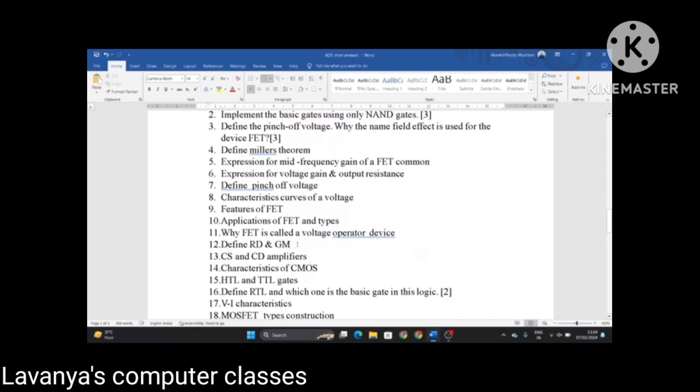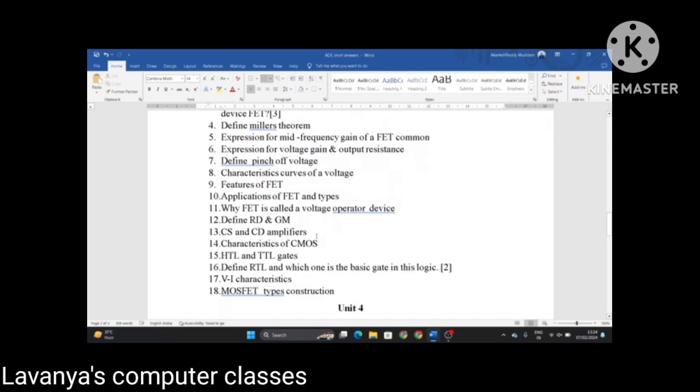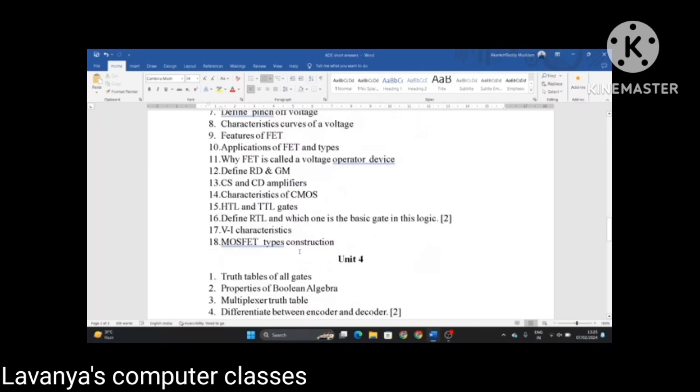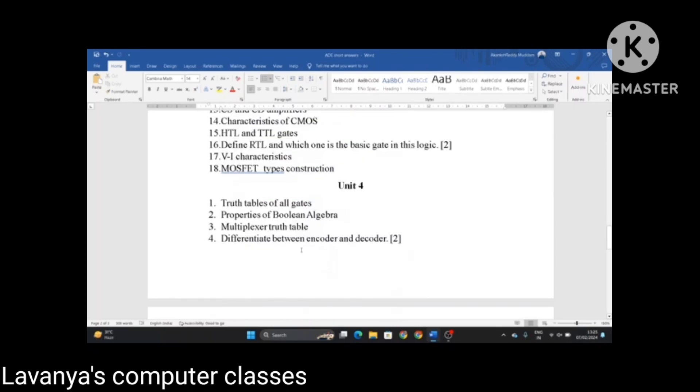Define RD and GM. Explain CS and CD amplifiers, characteristics of CMOS, HTL and DTL gates. Define RTL and which one is the basic gates in this logic. VI characteristics, MOSFET, its types and how to construct. These are the important questions in unit 3.